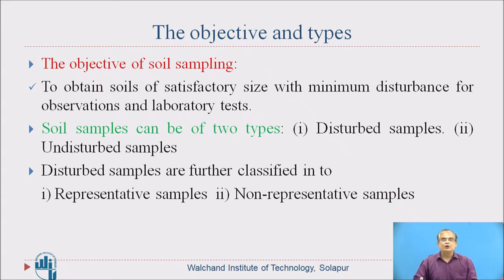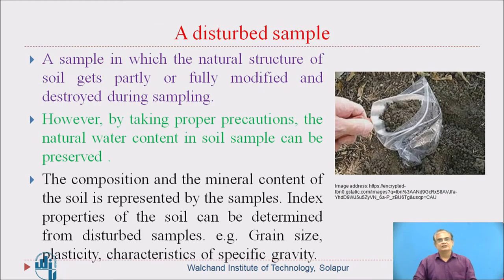Soil samples can be of two types: disturbed samples and undisturbed samples. Disturbed samples are further classified into representative and non-representative samples. A sample in which the natural structure of the soil gets partly or fully modified and destroyed during sampling is called a disturbed sample.